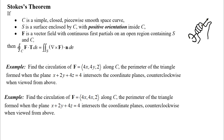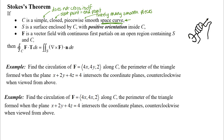It says if C is a simple, closed, piecewise smooth space curve. We've talked about simple, closed, and piecewise smooth before. Simple means it does not cross itself. Closed means that its starting point and ending point are the same point. Piecewise smooth means that we can break that into finitely many pieces joined at the endpoints, each of which have a smooth parameterization. And here we're talking about a space curve, so that curve is in R3.